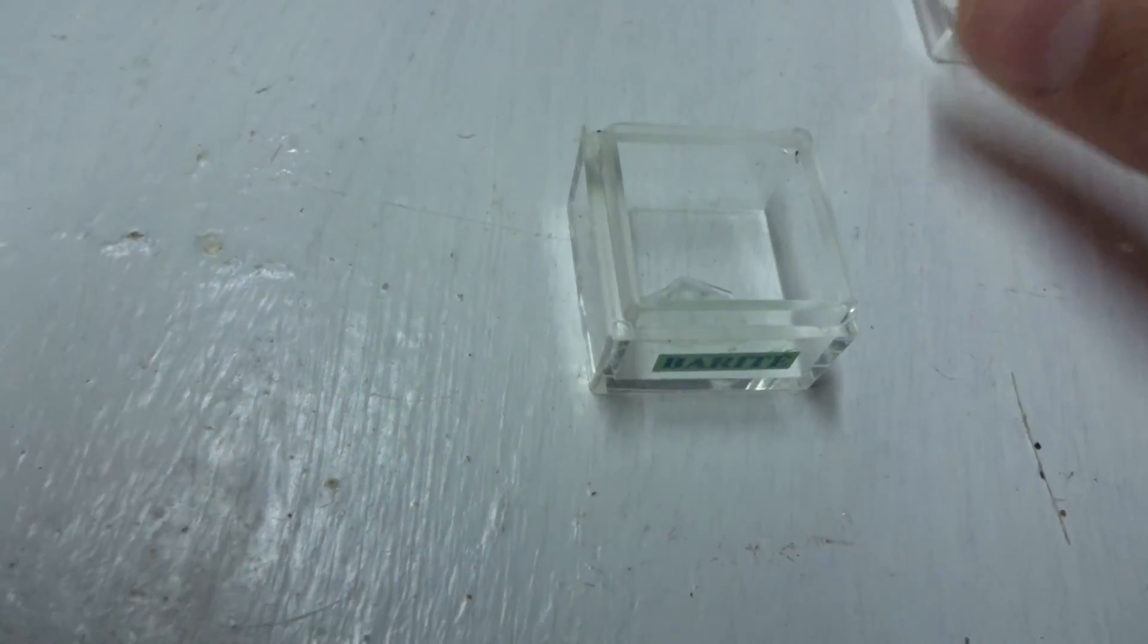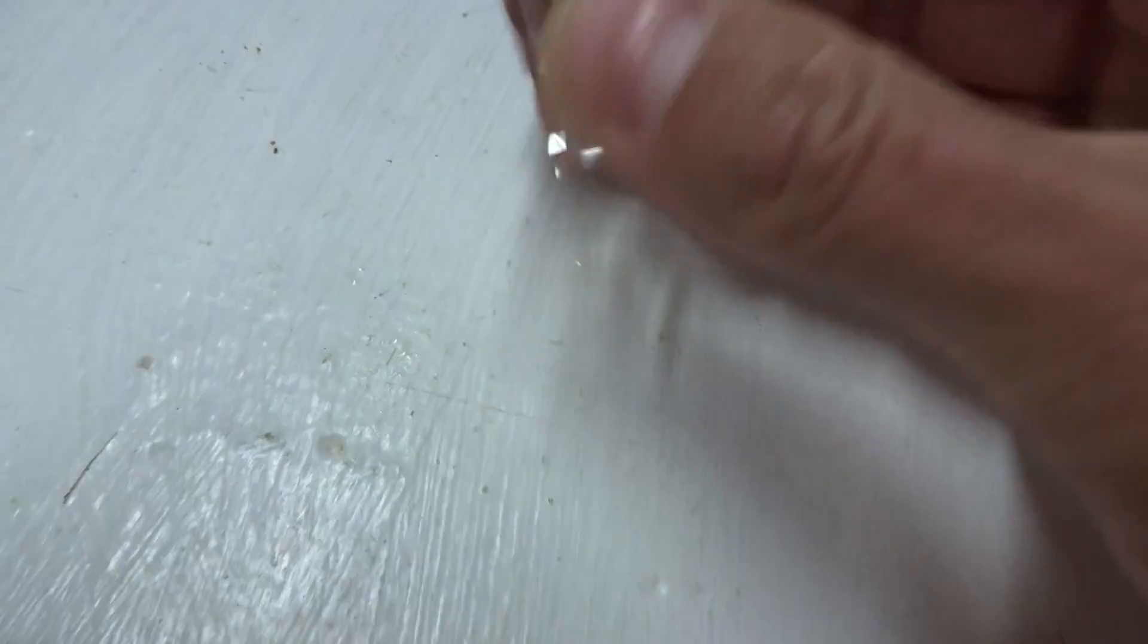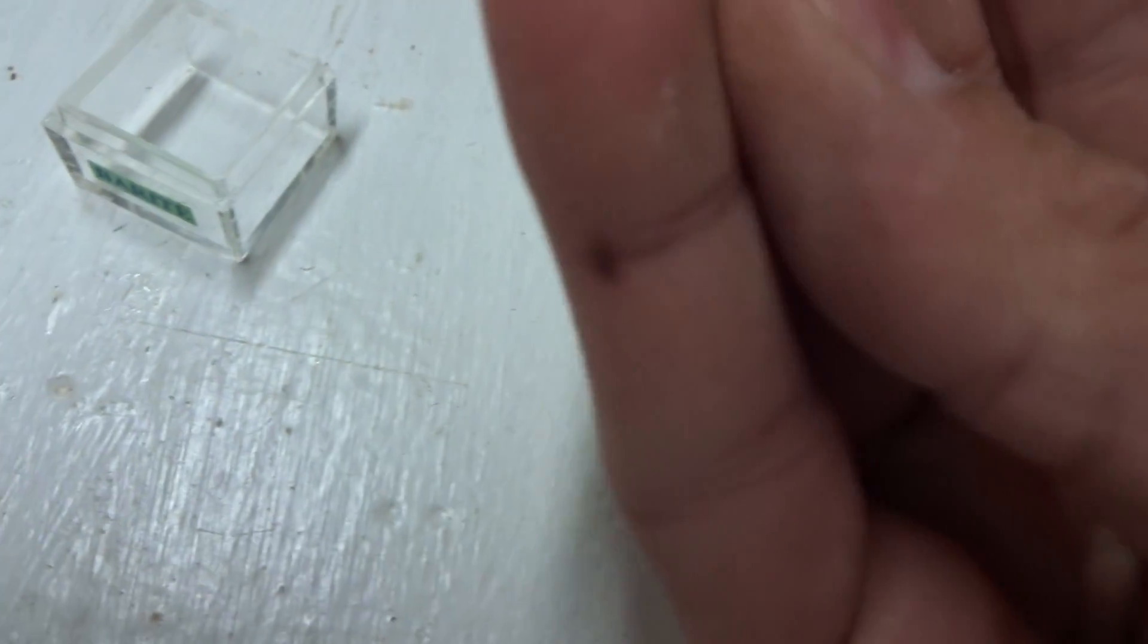Another family are the sulfates. I have only one sulfate to show you. It's very small. Here maybe you can see it on this. There it is and this is called barite, a sulfate.